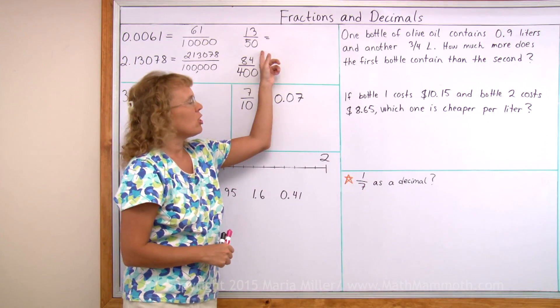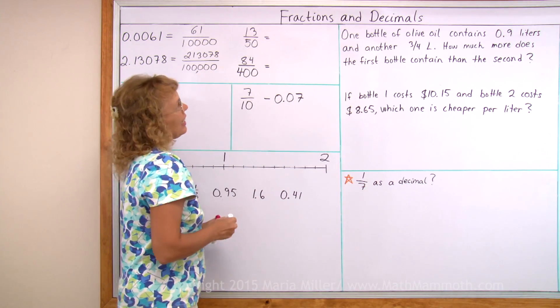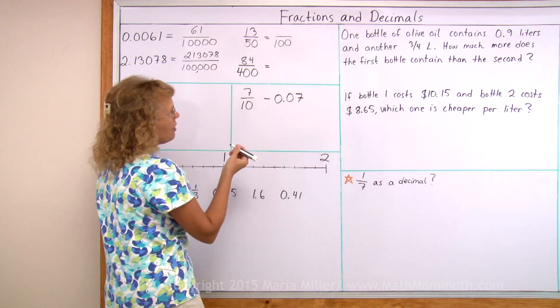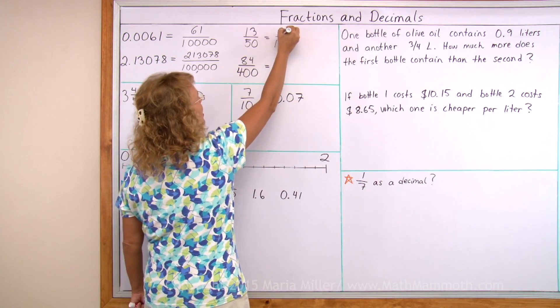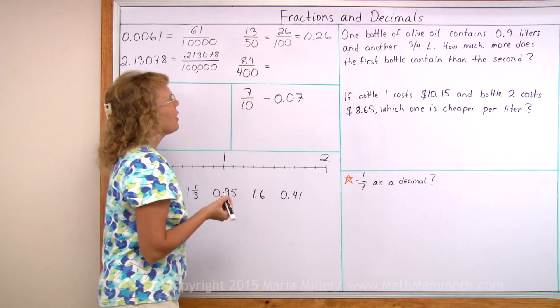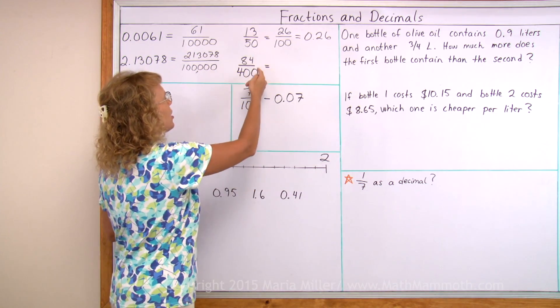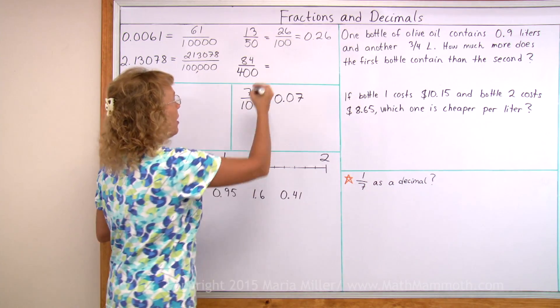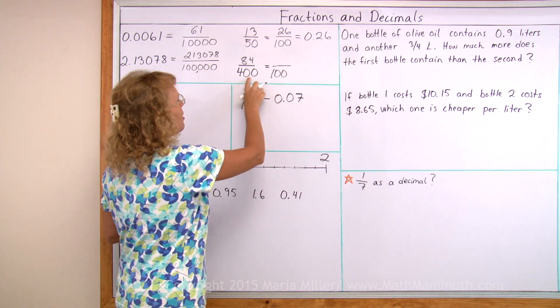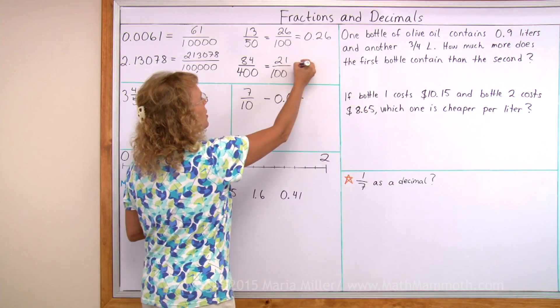How about the other way? Can you change this fraction into a decimal? This one is an easy one because we can find an equivalent fraction with a denominator of 100. 50 times 2 is here and then 13 times 2 is 26. So it is 26 hundredths or 0.26. This one ends up being easy too because it just so happens that these two are divisible by four. So I can simplify and again get an equivalent fraction with a denominator of 100 here. 400 divided by 4 gives me 100, and 84 divided by 4 is 21. So this is 0.21.